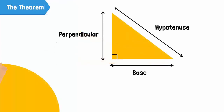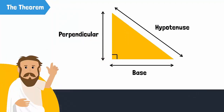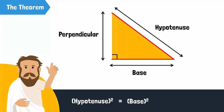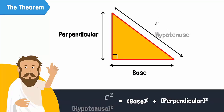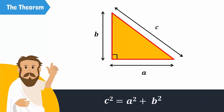During his study, Pythagoras realized something amazing. In all right angle triangles, the square of the hypotenuse was always equal to the square of the base added to the square of the perpendicular. In other words, in a right angle triangle, the square of the longest side is equal to the sum of the squares of the two shorter sides.